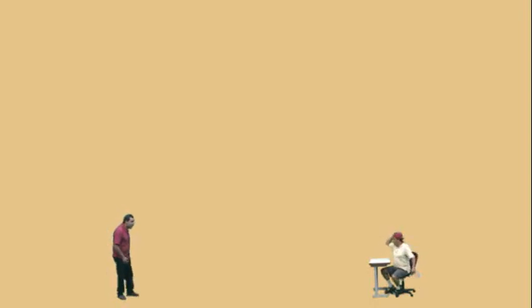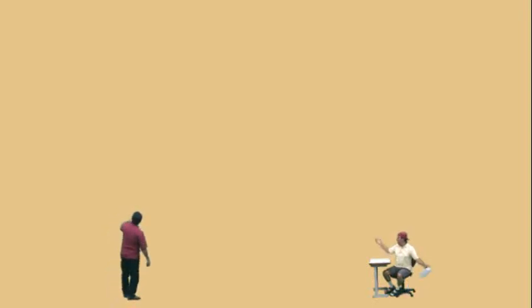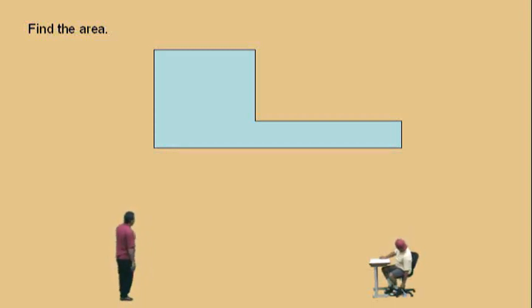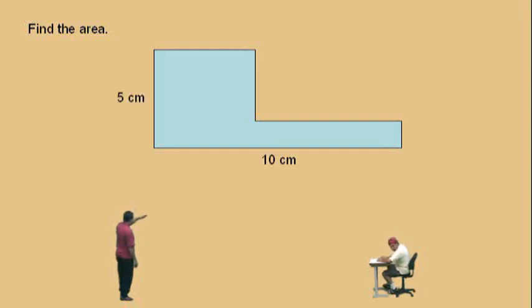Hey Charlie, you ready to go? We're doing your favorite subject — it's finding area. Here's our first figure right here. That was 5 centimeters, 10 centimeters, 1 centimeter, and that's 6 centimeters, and those 2 side lengths are missing.